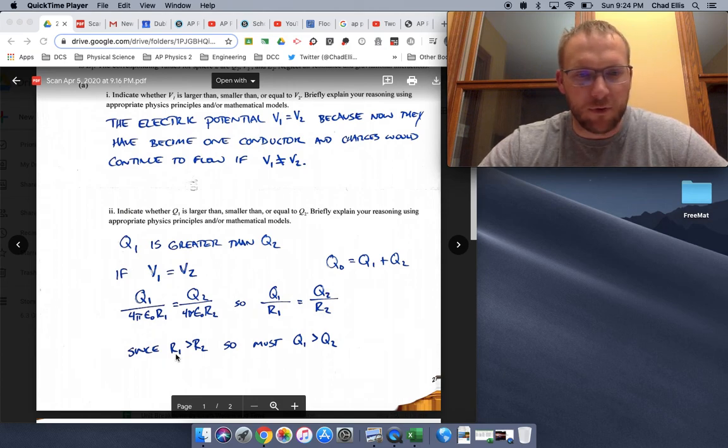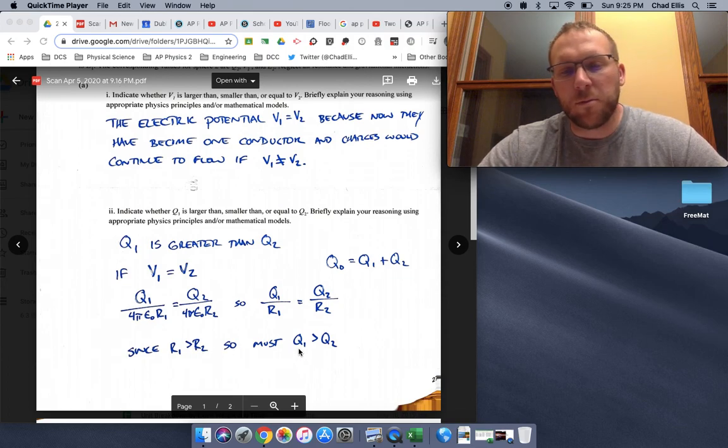Here's what we know. R1 is much greater than R2. So Q1 then also must be greater than Q2 for those ratios to be the same.